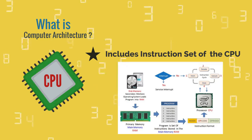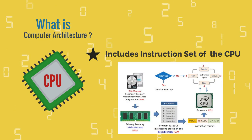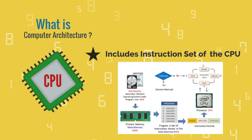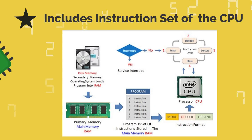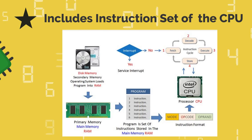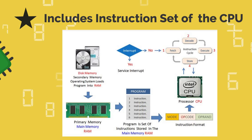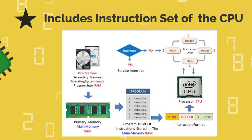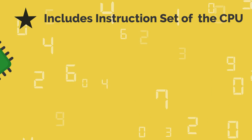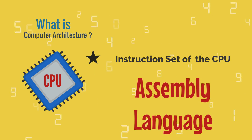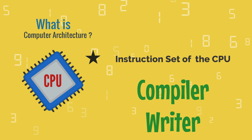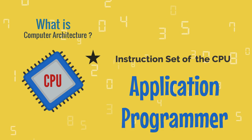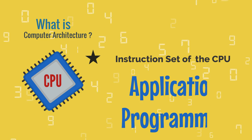The ISA provides the only way through which a user is able to interact with the hardware. It can be viewed as a programmer's manual because it is the portion of the machine that is visible to the assembly language programmer, the compiler writer, and the application programmer.